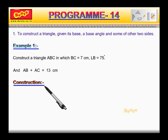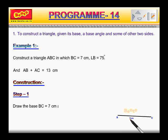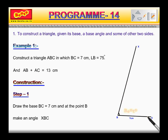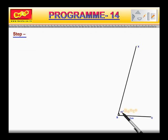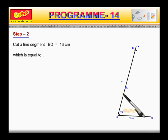Construction Step 1: Draw the base BC which is equal to 7 cm, and at the point B, make an angle XBC which is equal to 75 degrees. Step 2: Cut a line segment BD which is equal to 13 cm, which is equal to AB plus AC, from the ray BX.